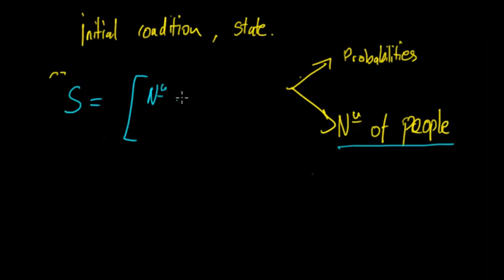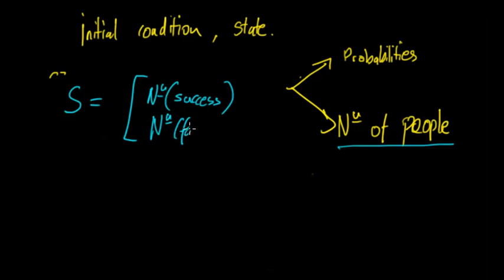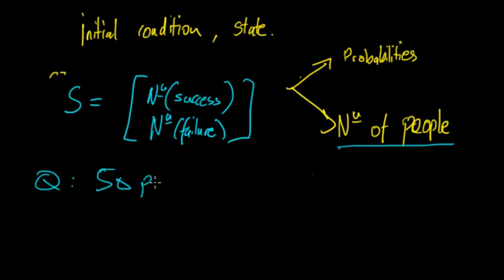So S is now equal to the number of people - that's just notation for the number. It's the number of people who have success over the number of people who have failure. For example, let's say 50 people eat pizza and 80 people eat curry.